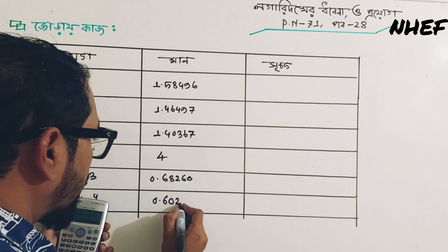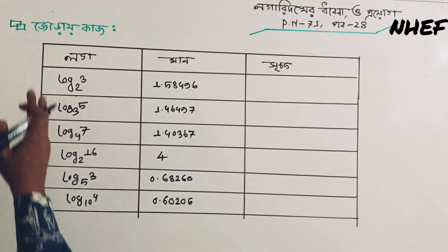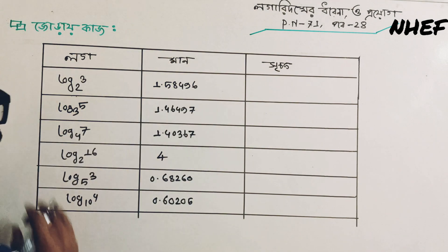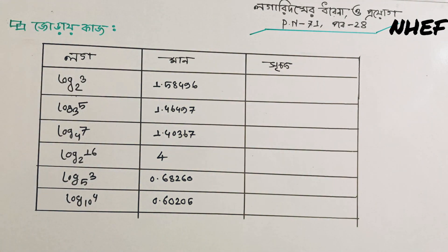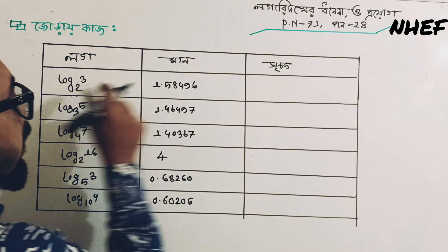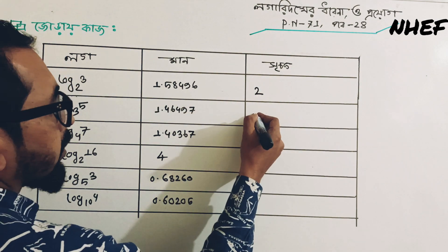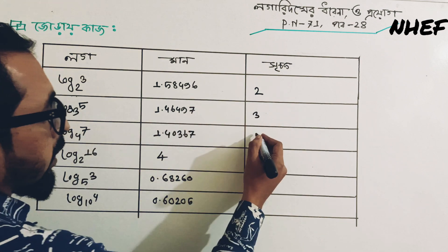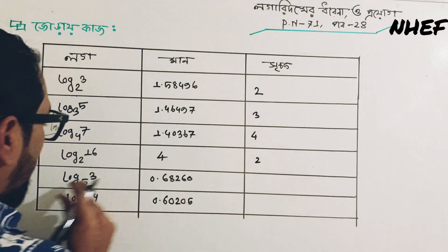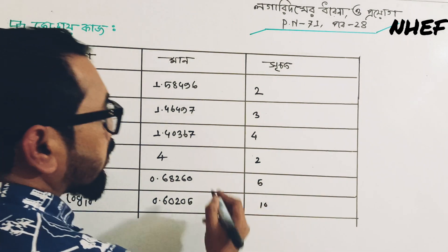0.60205, 0.60205, 0.6585, 2.6604. 0.658 — why it's 10, right.